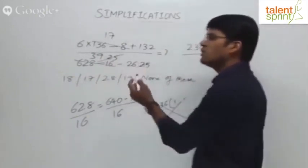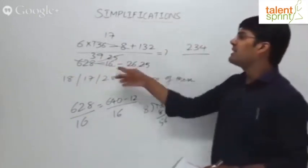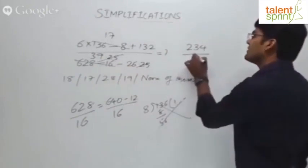39.25 minus 26.25. Forget about the decimal parts, 0.25 and 0.25 get cancelled. 39 minus 26 is 13.